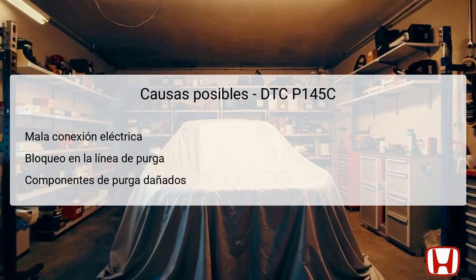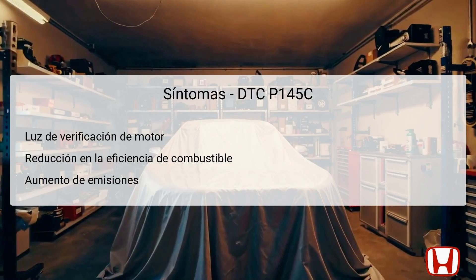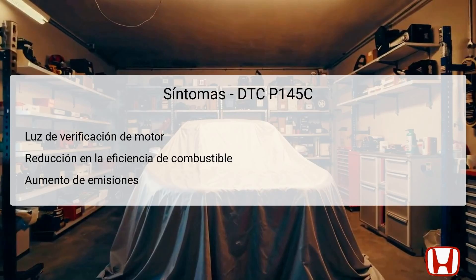Understanding these potential causes will help pinpoint the exact nature of the problem. When DTC P145C is active, several symptoms may be noticed. The most immediate indicator is typically the illumination of the check engine light on the dashboard, alerting the driver to an issue with the vehicle's emission system. Furthermore, drivers might experience a reduction in fuel efficiency, as malfunctioning components can disrupt the proper combustion process, leading to wasted fuel. Increased emissions may also occur, posing not only environmental concerns but potentially affecting compliance with emissions regulations. Other symptoms could include unusual engine performance, particularly during acceleration or deceleration, making it essential for drivers to investigate the issue promptly.